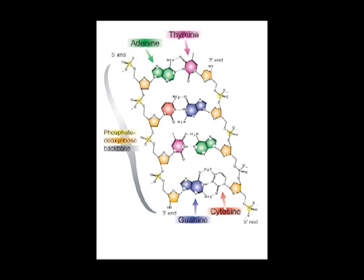The sugar and the phosphate form the backbone of the helix, and the nucleotides are in the middle. They kind of look like rungs of a ladder. There are only four different nucleotides: adenine, thymine, cytosine, and guanine.